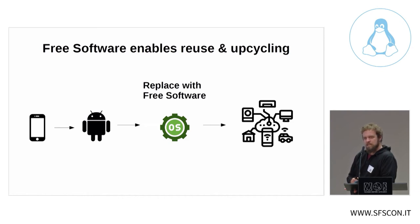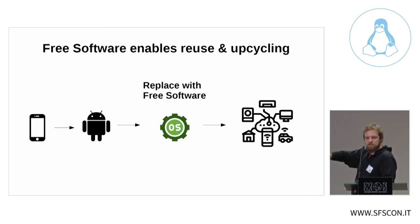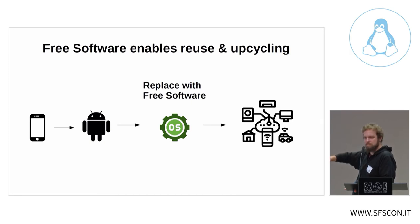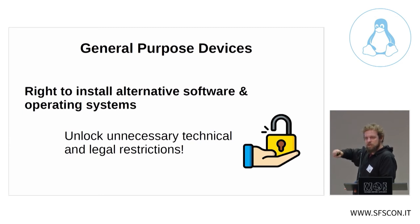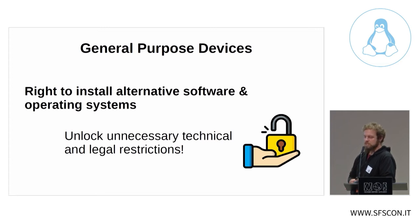It would be even more beneficial if you could replace the operating system with a completely different one — for example, reusing an old phone in your home infrastructure for an automatic watering system. In order to do that, and this is my second point, what we need are general purpose devices. Our phones are as powerful as the computer that guided the first rocket to the moon. Why waste them just because the operating system is no longer updated? When we have the right to install alternative software and operating systems, and unlock the technical and legal restrictions that hinder us today, that is a big step toward a more sustainable digital society.